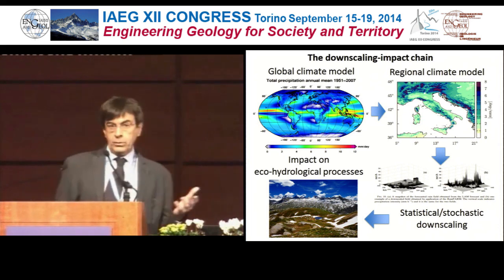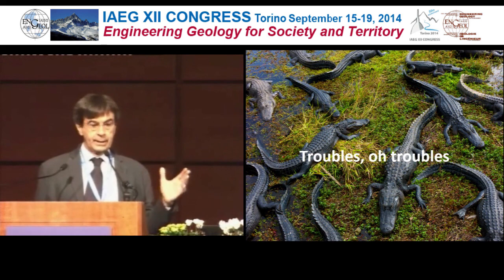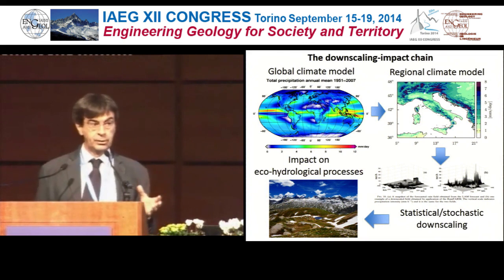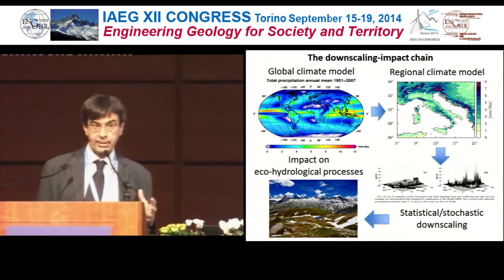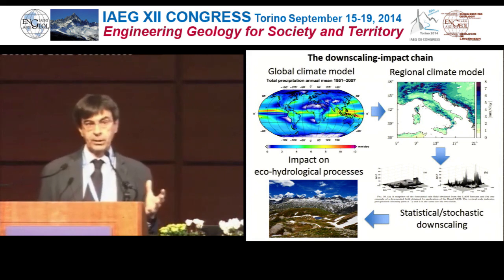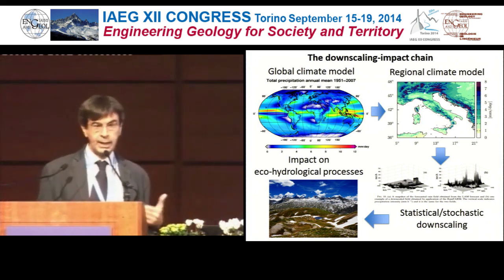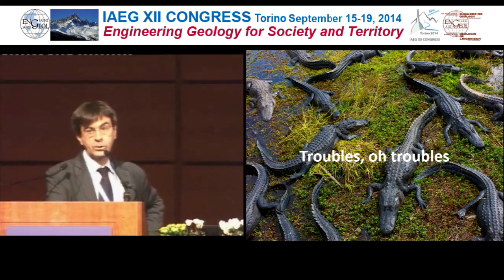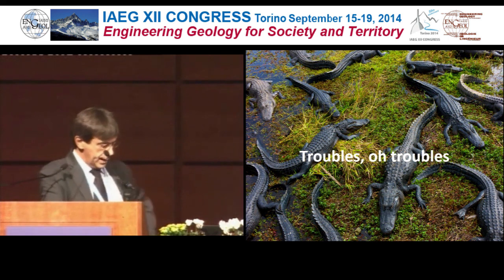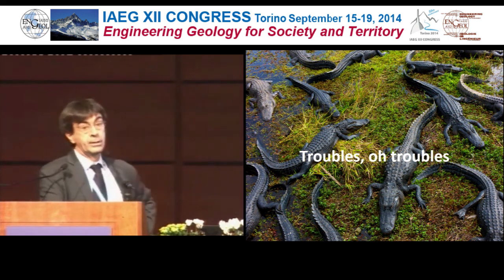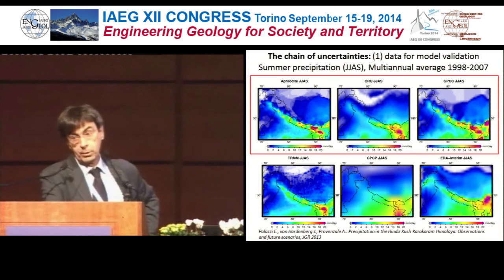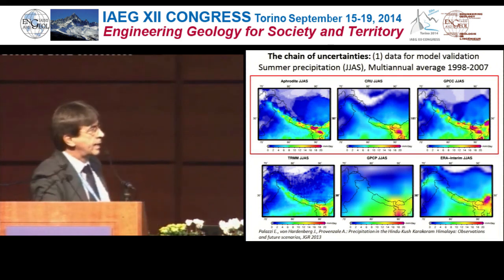So we have this nice procedure — we can tell you what's happening to the little stream in your little valley with a catchment of 10 square kilometres. But in fact there are several troubles, and the situation is much less pleasant than it might seem. The troubles begin with needing data to validate the models — large-scale data to validate the large-scale and regional climate models.